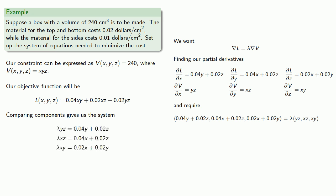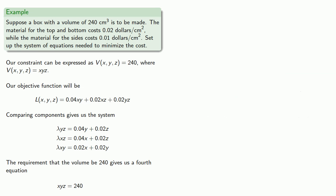Now there's four unknowns, x, y, z, and lambda. So we need a fourth equation. And the requirement that the volume be 240 gives us that fourth equation. And at this point we have set up the system of equations to be solved. And we can pass this off to a mechanical device.